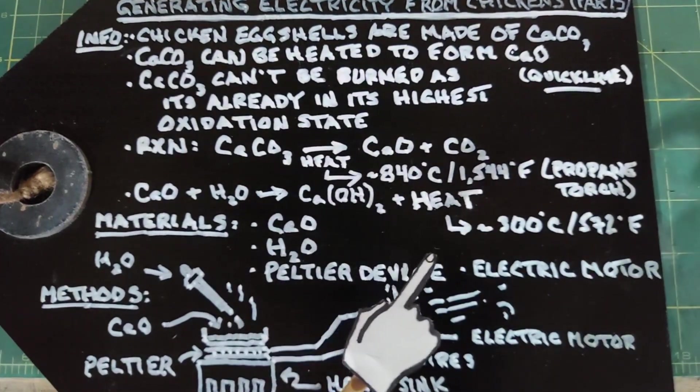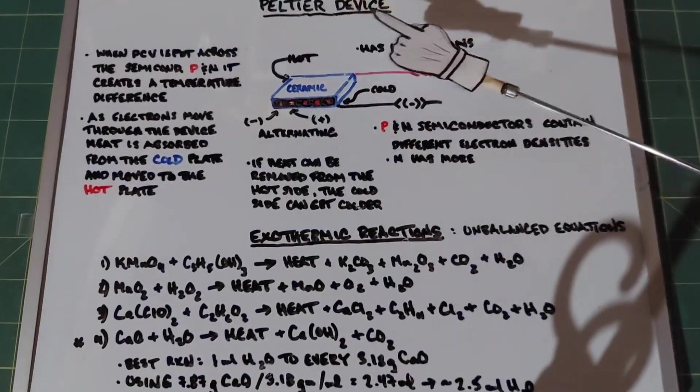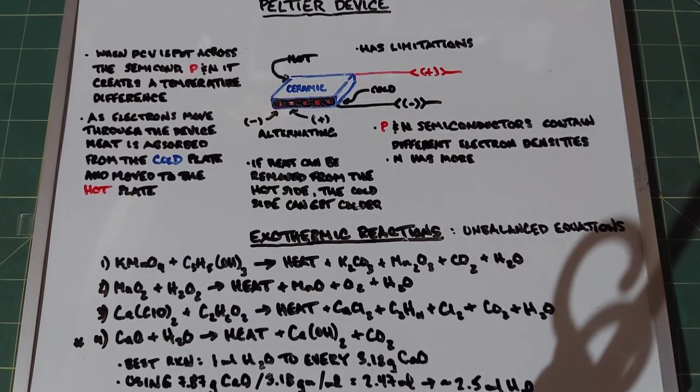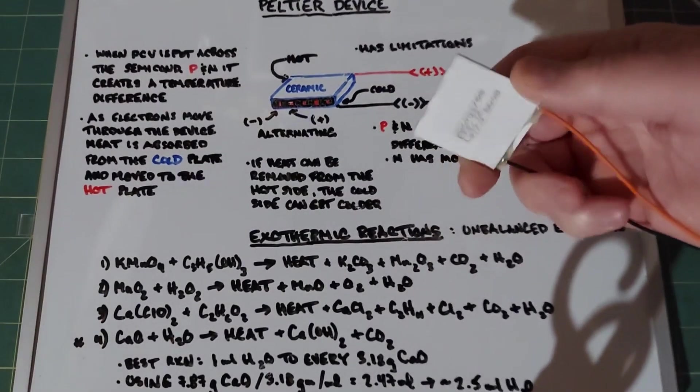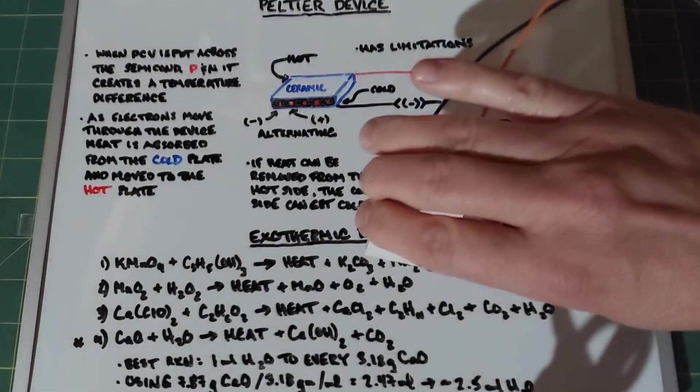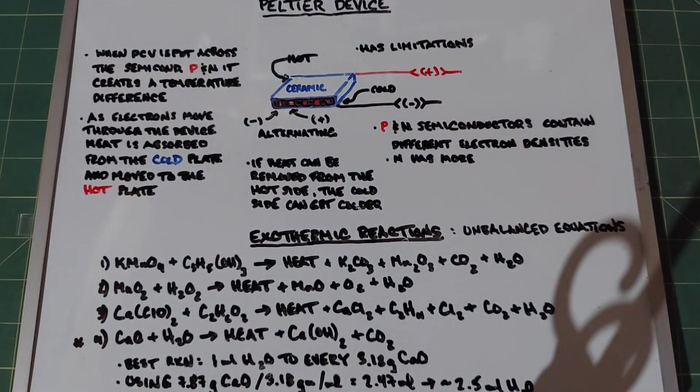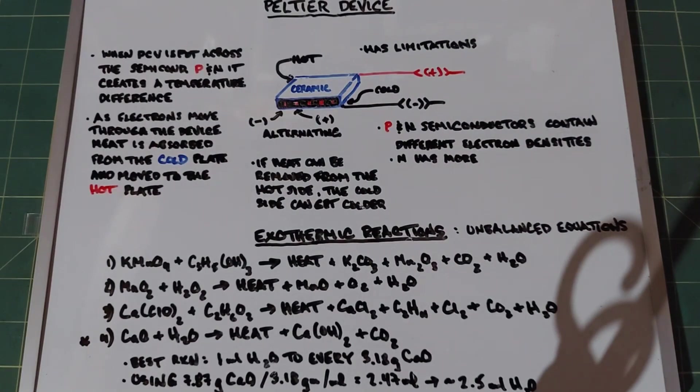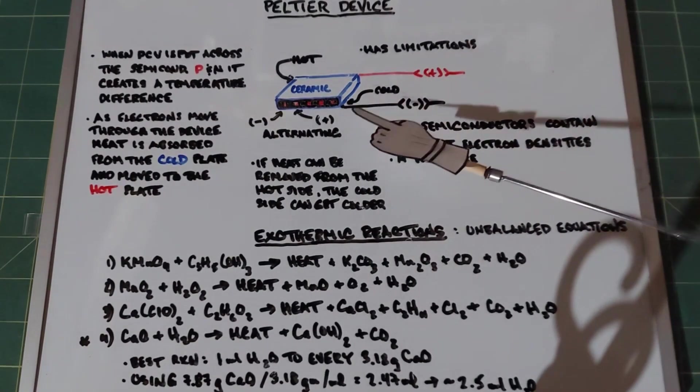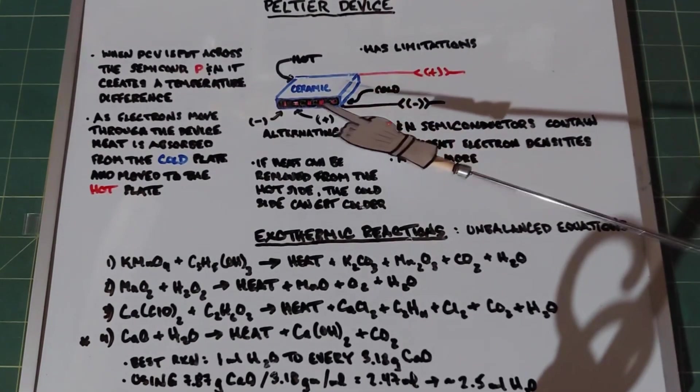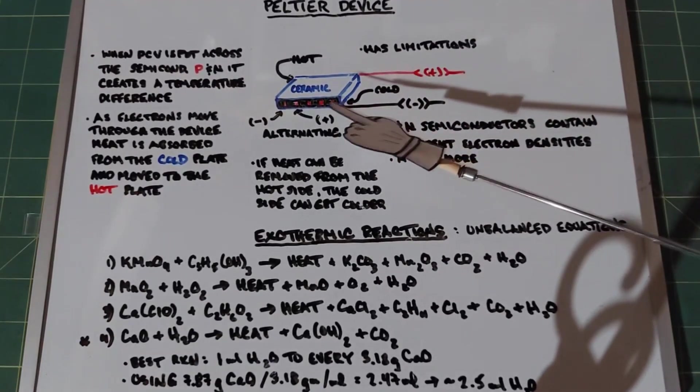Let's talk more about this Peltier device. I have one right here. It's simply two white plates with a couple wires coming out, and it really looks rather unassuming. In spite of that, there's actually a lot going on. The two plates are made of ceramic, and in the middle, sandwiched between those ceramic plates are semiconductors.